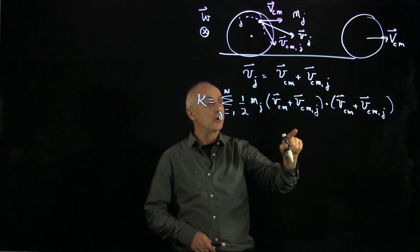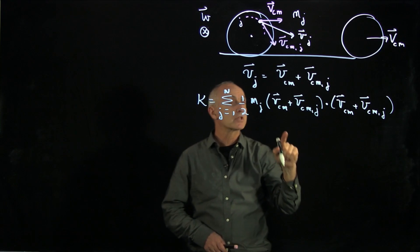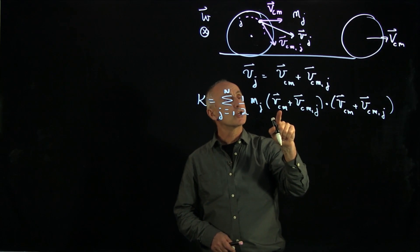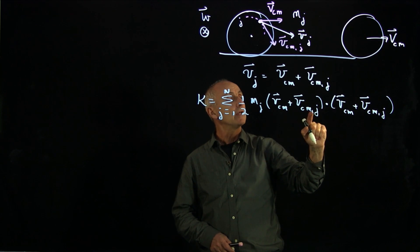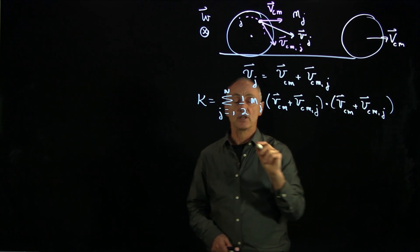So we can write that as vcm plus vcmj dot vcm plus vcmj. And that's just vj squared. So when we look at these terms, it looks complicated at first. But there's going to be vcm dot vcm. There's two cross terms. They're identical. And vcmj dot vcmj.